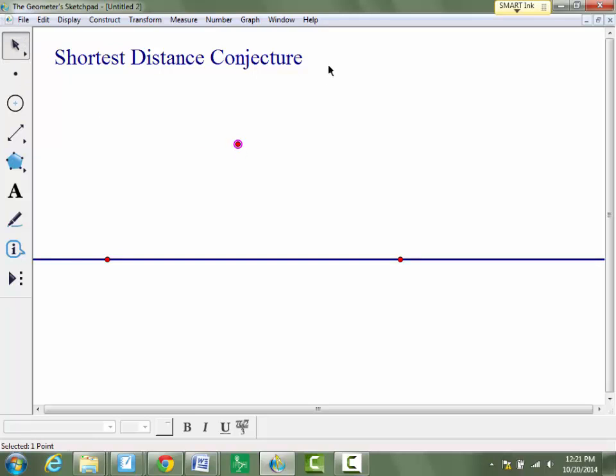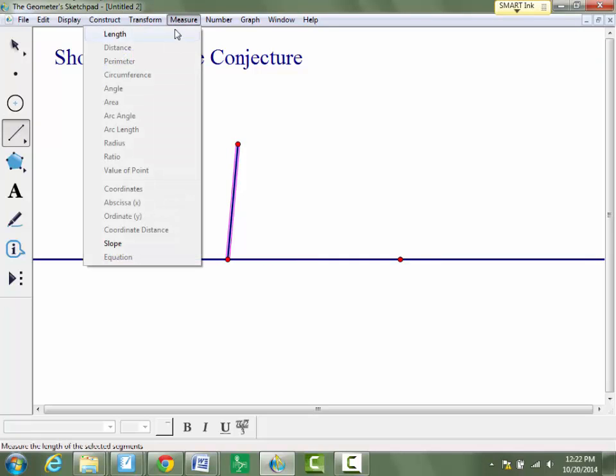And what this is asking, or what the conjecture states is, how do you know what the shortest distance from this point to this line would be? And so what we're going to do is we're going to construct a segment that goes from this point to this line, and we're going to measure that length.